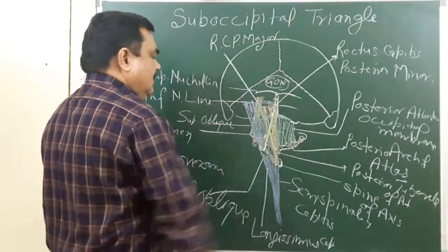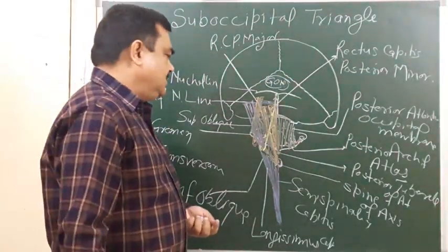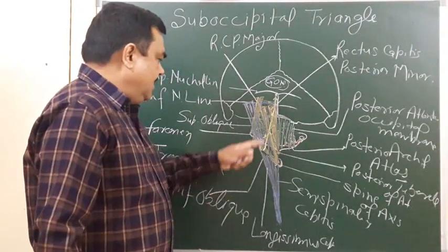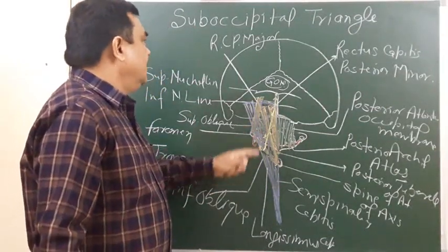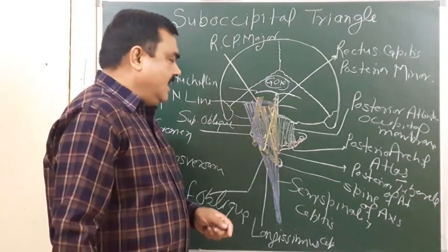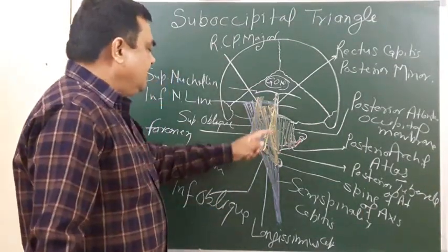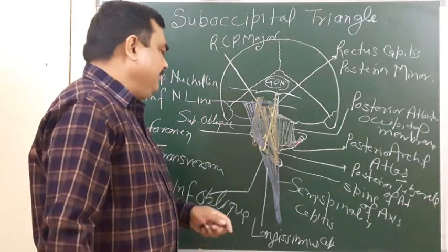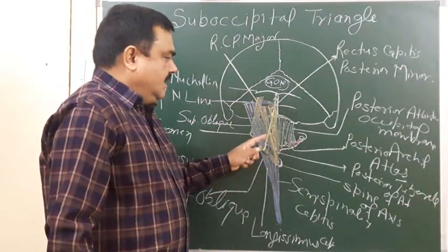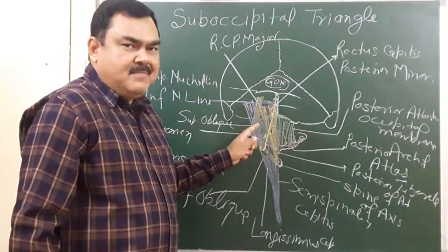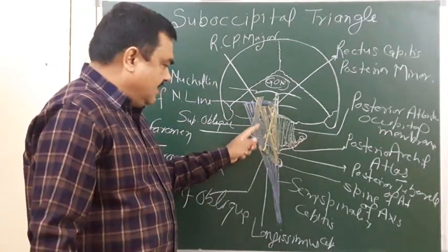So this is the structure of the suboccipital triangle — its boundary, content, roof, and floor. This region is clinically important because in case of failure of lumbar puncture, a cistern puncture is done here.